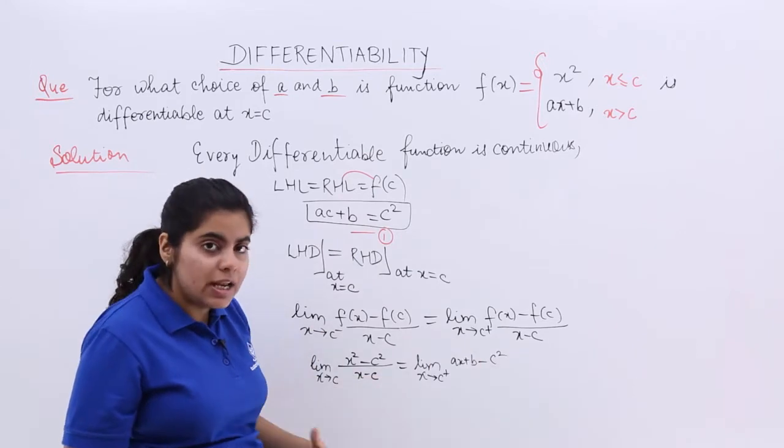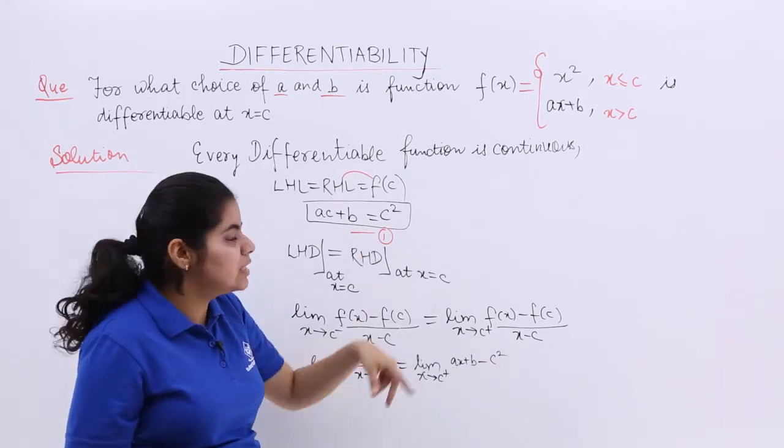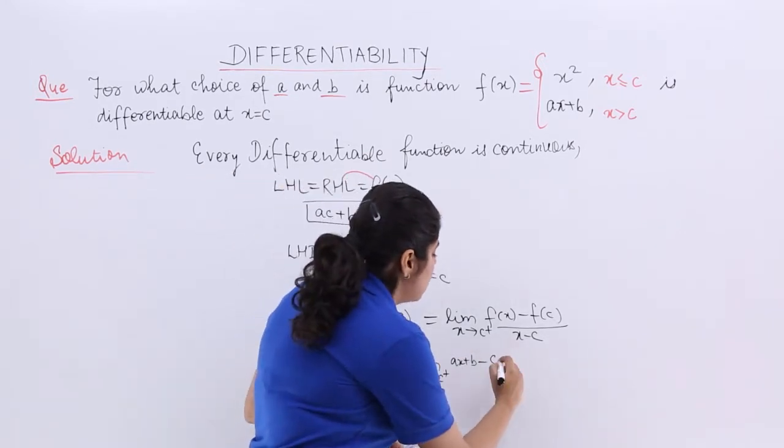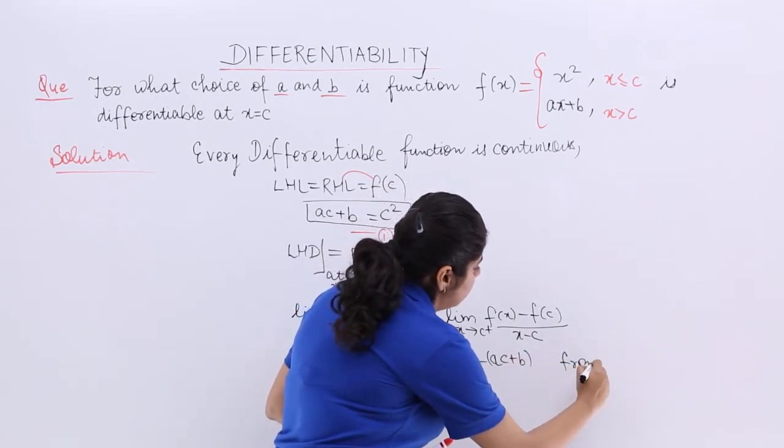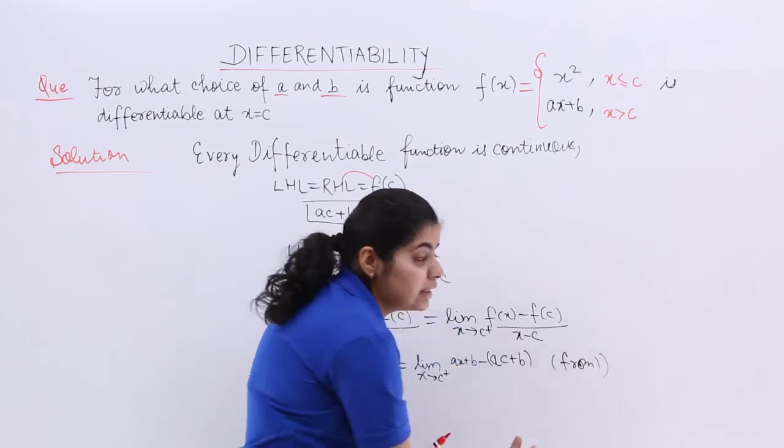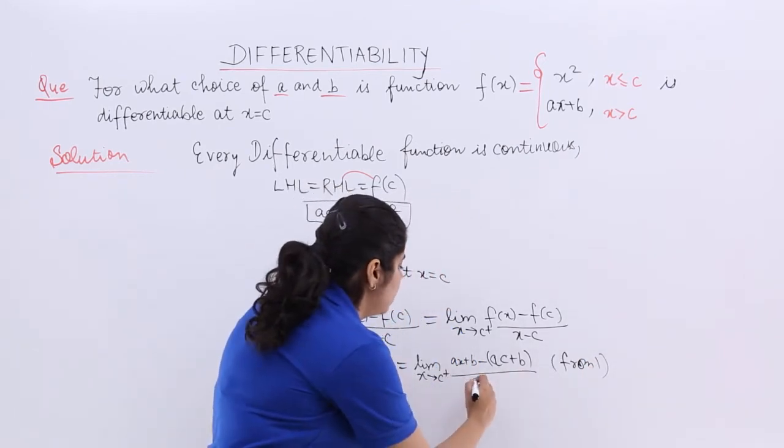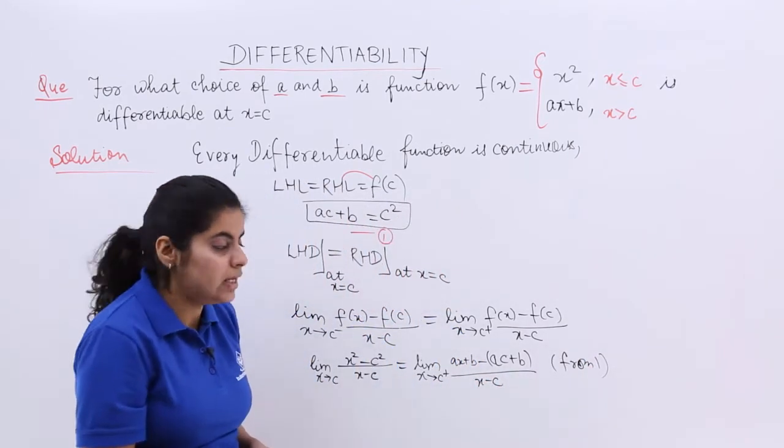Let us now substitute the value of c square from equation 1. So, it becomes Ac plus B. And, this is from 1. Why have we done this? You will understand in the next step. x minus c. Right?